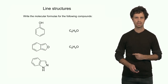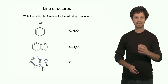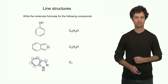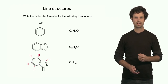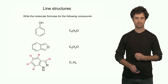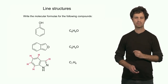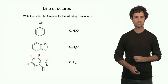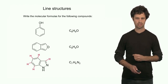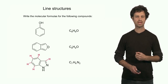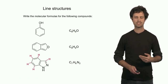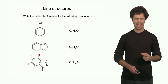The last structure has a total of seven carbon atoms. We find a total of six hydrogen atoms — note that there is a hydrogen atom on the nitrogen that we have to count too. It also has two nitrogens in its structure, so the total molecular formula is C7H6N2.